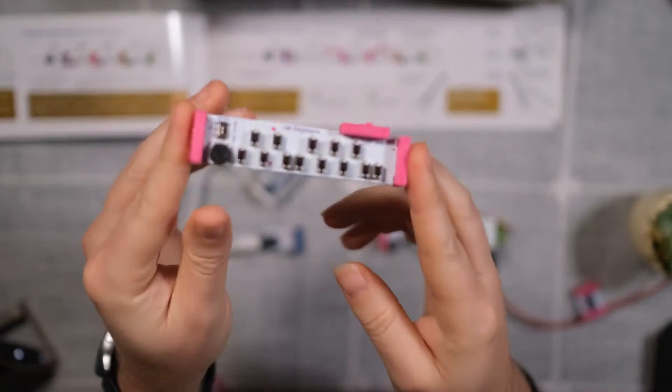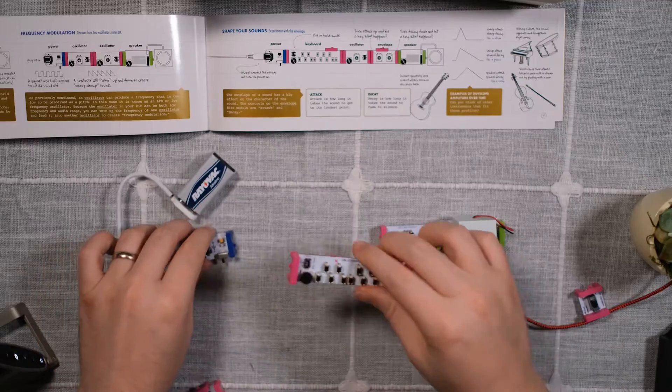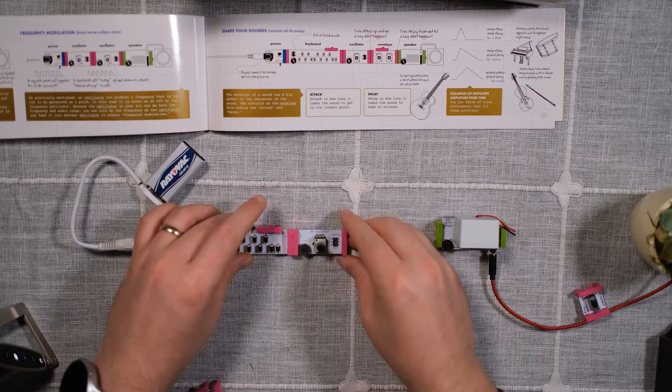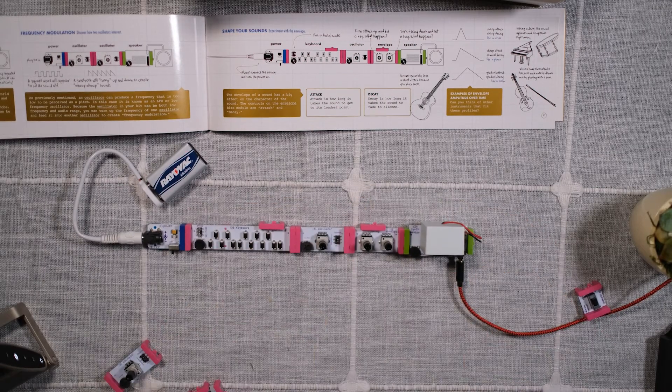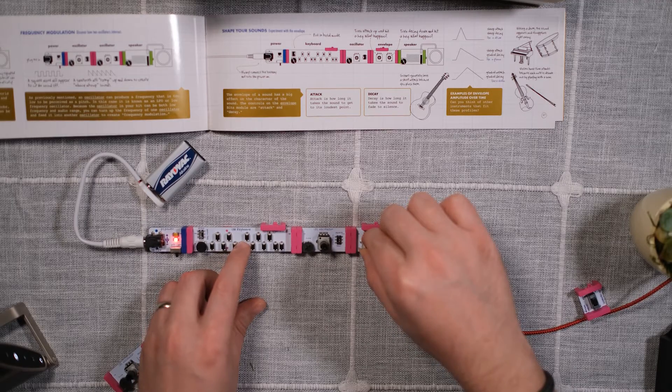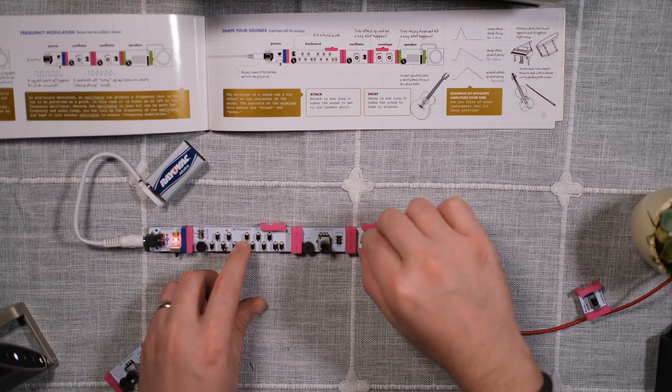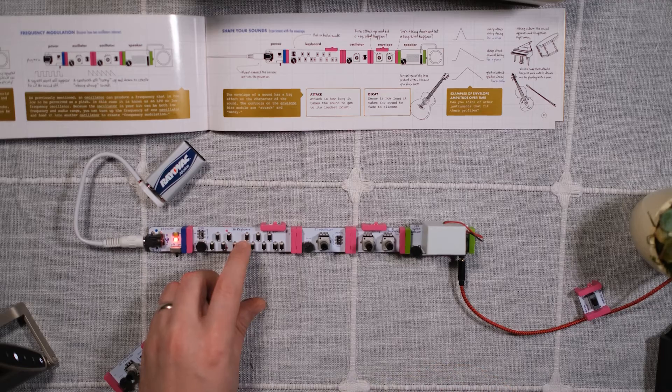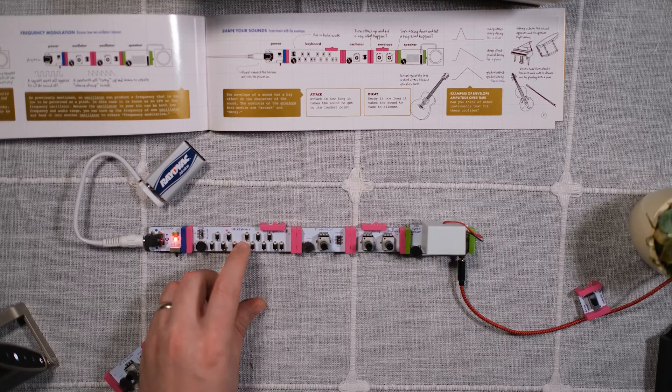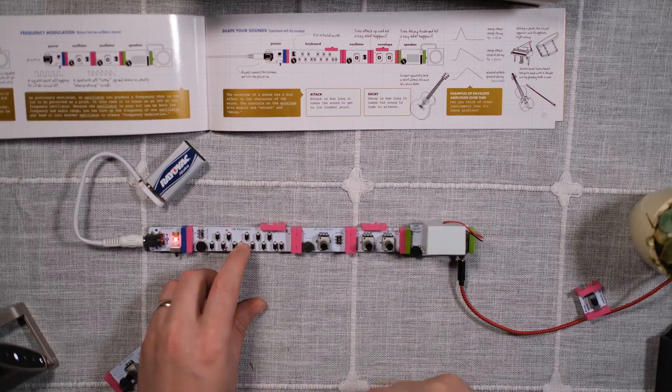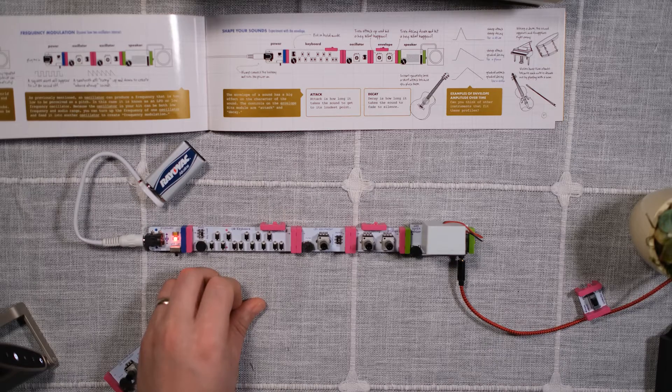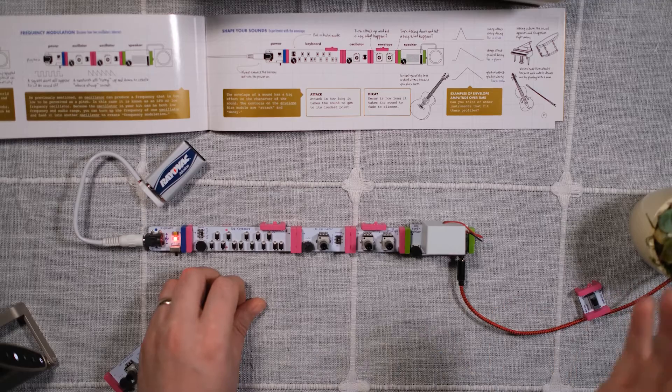So we're going to use the keyboard, and it's going to be in hold mode. And if you remember from earlier, we put the keyboard right after the power source, and then we put the oscillator after the keyboard, and then we put the envelope after the oscillator. If you turn the attack way up, you can get a more drawn-out note. If we pull out the decay as well, a long note that fades in and fades out. So now they're turned all the way up, both of them. A long swell and a long tail.